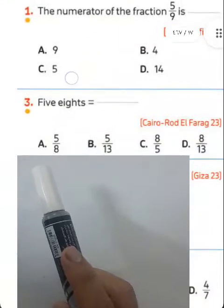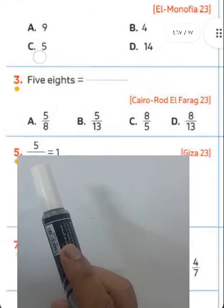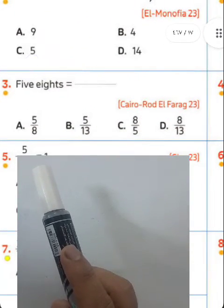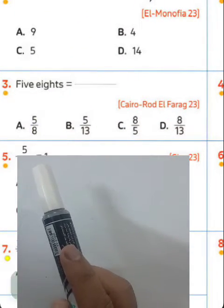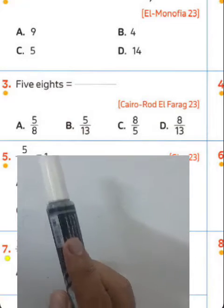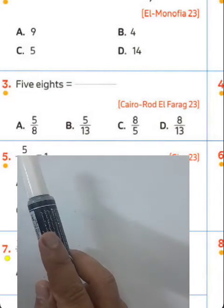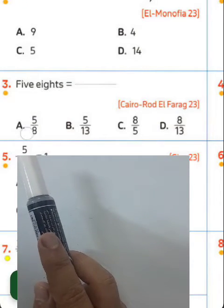Number three: 5 eighths — 5 eighths means 5 over 8. Choose letter A. 5 eighths is 5 over 8.